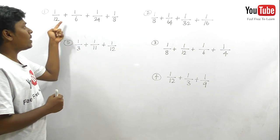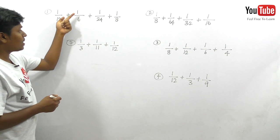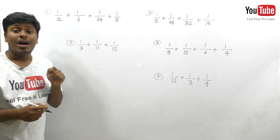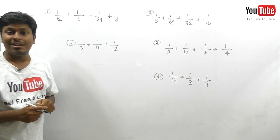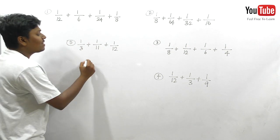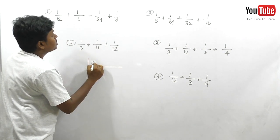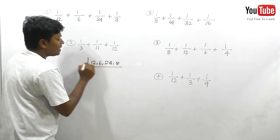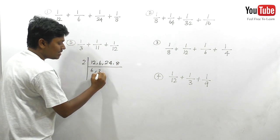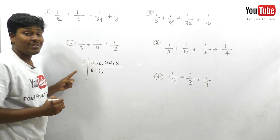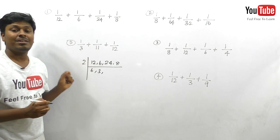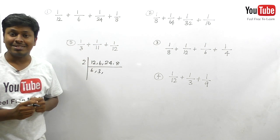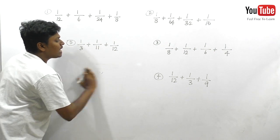Here it is: 1/12 + 1/6 + 1/24 + 1/8. The normal way of solving is the school method — that is, 12, 6, 24, 8, then we put 2 here: 6 twos are 12, 3 twos are 6. This method is okay, but if you are going for competitive exams you should be faster.